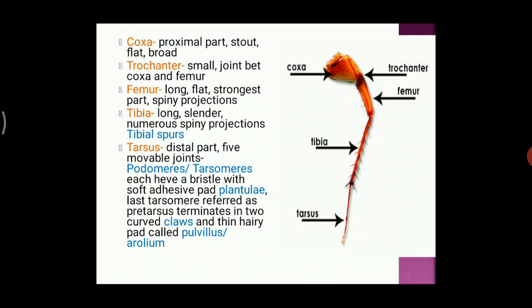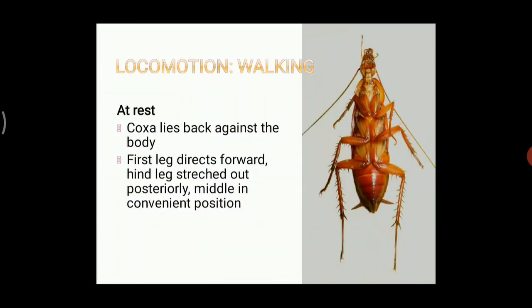The next segment is the tarsus. The tarsus is again made up of five segments. The last segment of the tarsus is made up of adhesive pads, also known as the pulvillus or arolium. During rest, the coxa of the legs lies back on the body. The very first leg is forwardly directed, the middle leg is in a convenient position, and the last leg — the hind leg — stretches posteriorly.